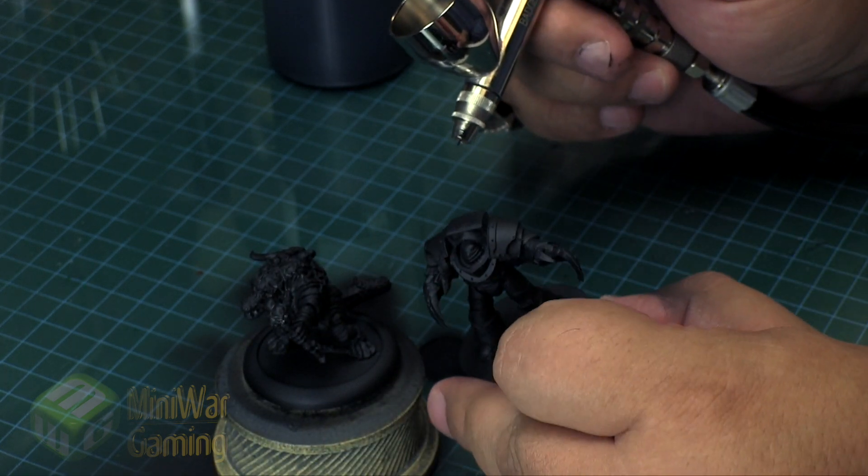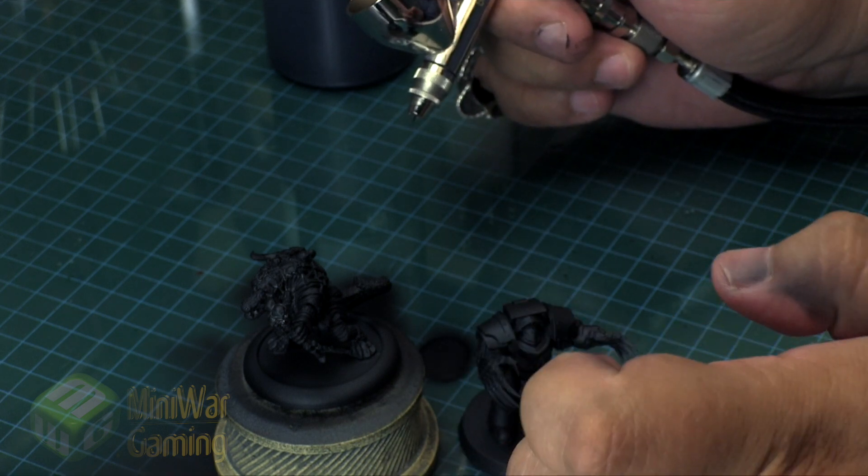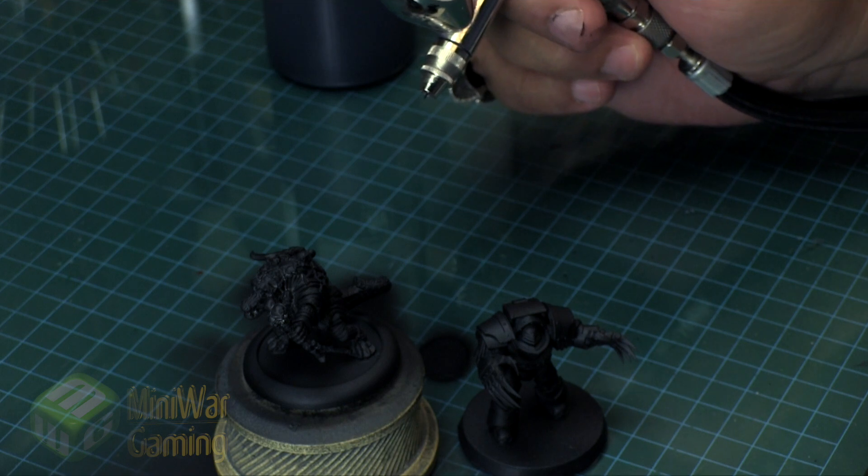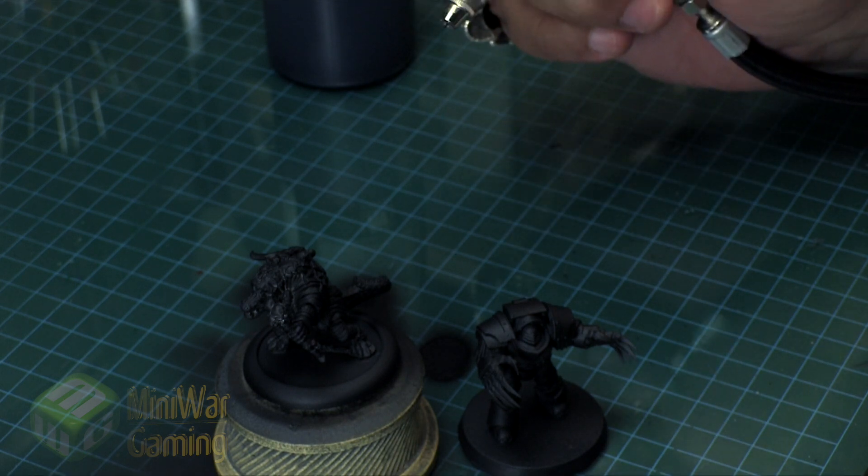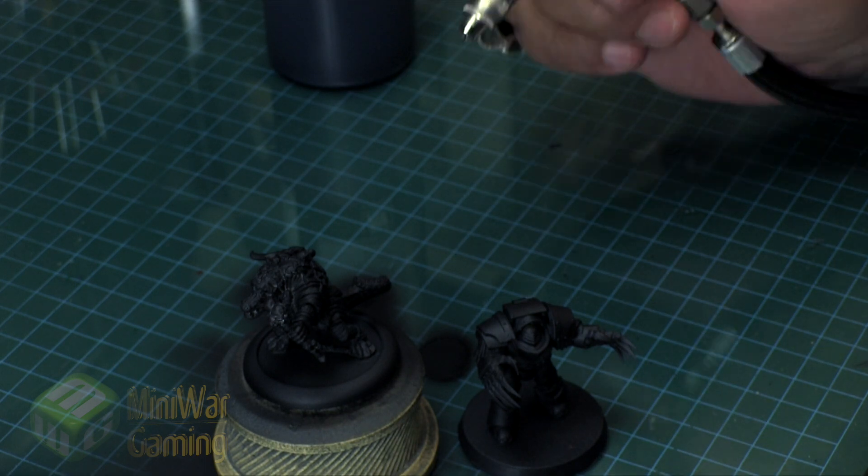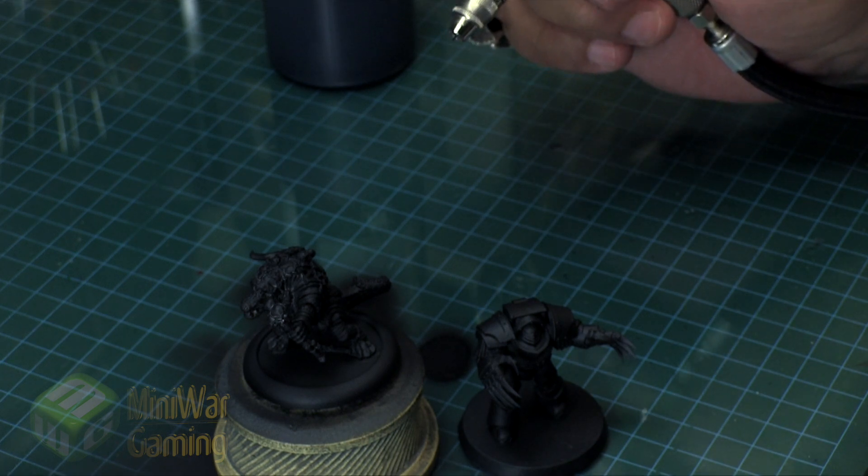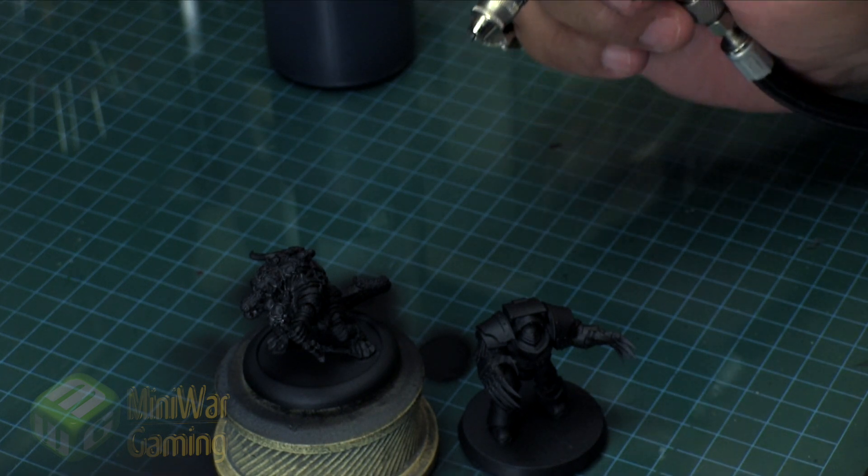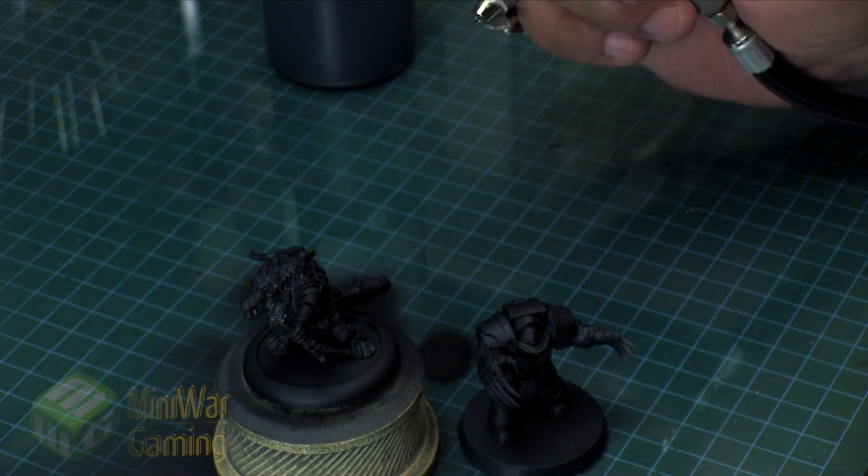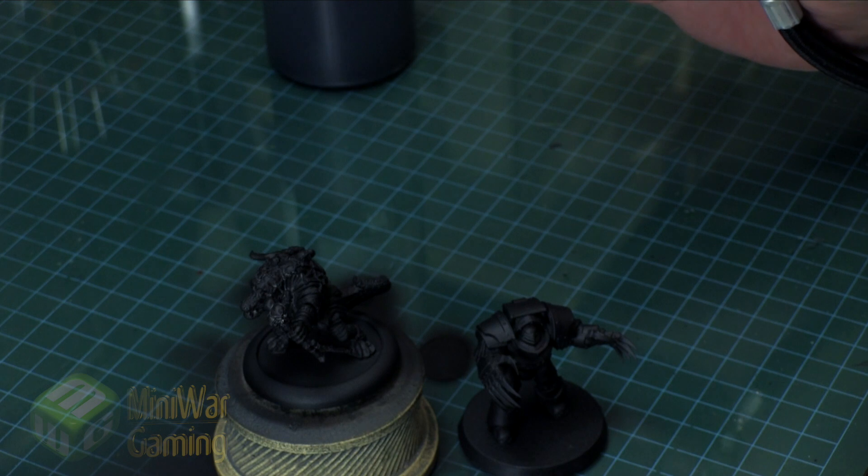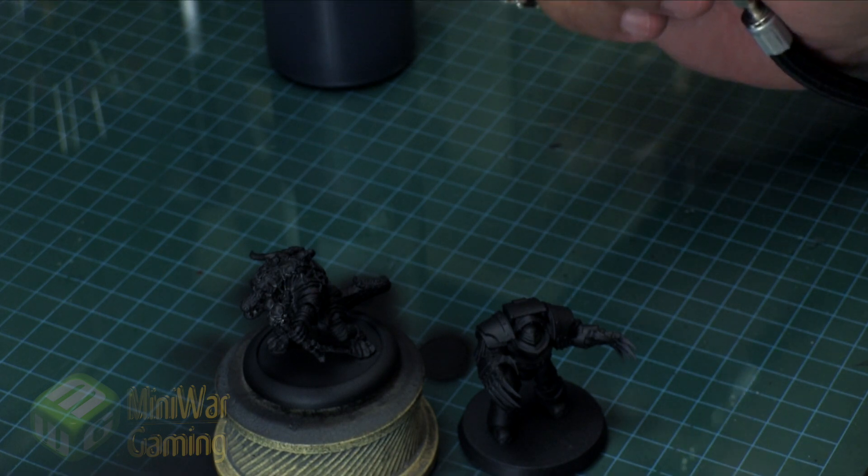It's as easy as that. Just the key things to remember is don't over prime. Primer is not meant to be just the color underneath your model - you're still going to be laying a base coat of color on there, even black on top of black. So again, it's just there to provide a surface for the paint to get a hold of.